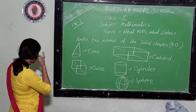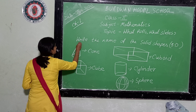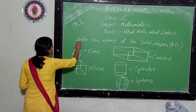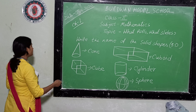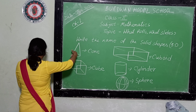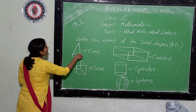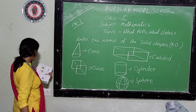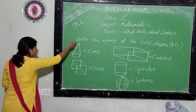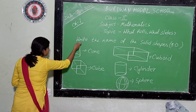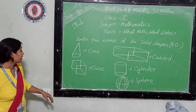Now, cone. This is a cone. In this cone, it has one vertex — this is the vertex. One vertex. And one curved face — this is the curved face. And how many edges are there? It has only one edge.